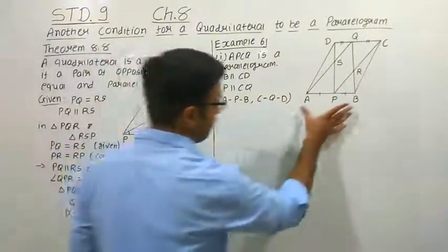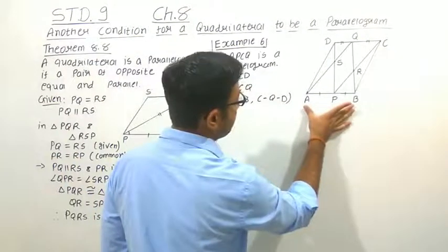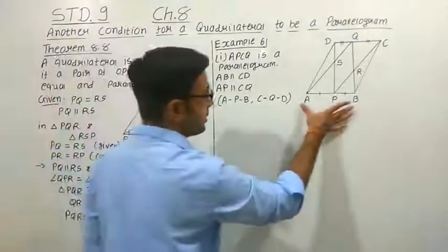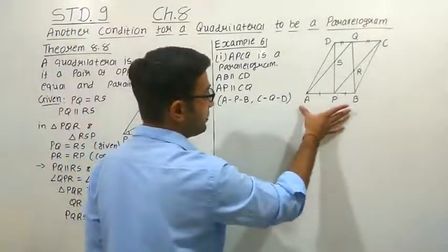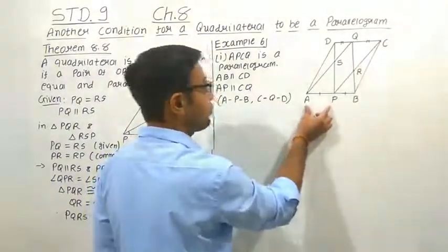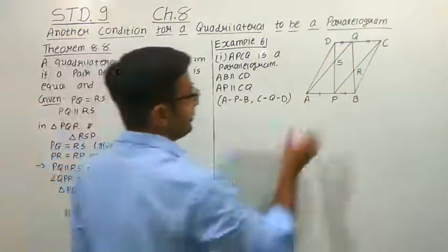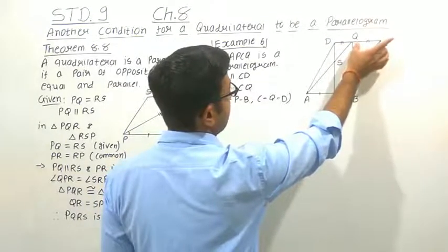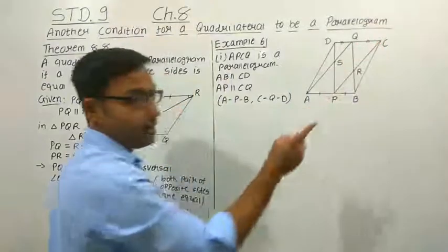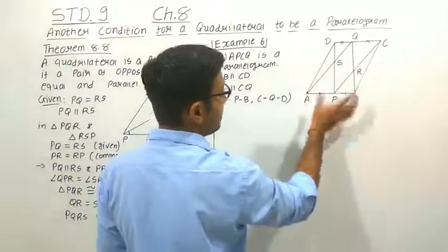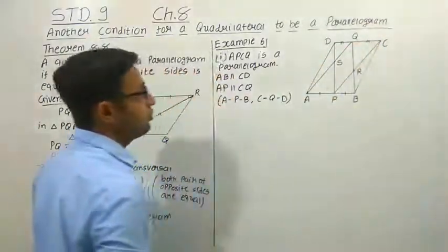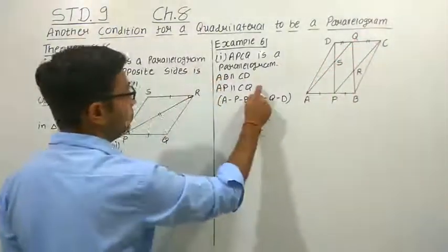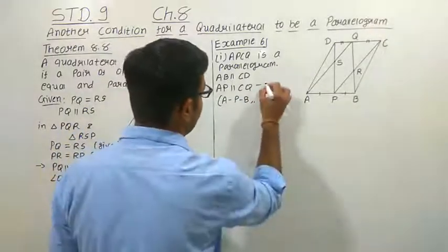Let us understand one more time. AB is parallel to CD, so AP — which is a part of side AB — is also parallel to CD. And CQ is a part on CD, so if CD is parallel to AB, then CQ is also parallel to AB. So AP and CQ are parallel to each other — equation number 1.